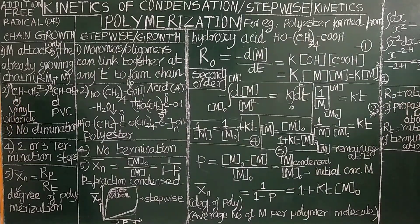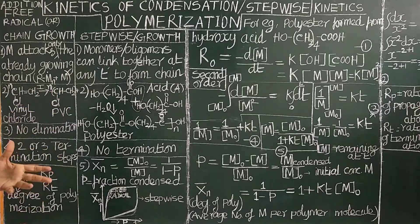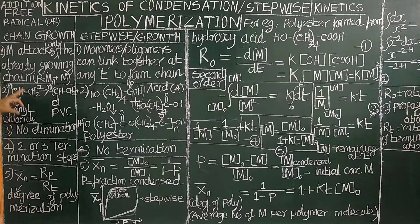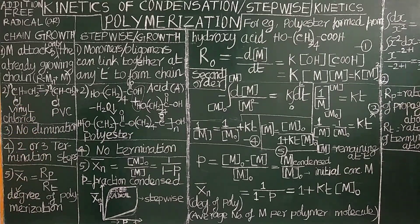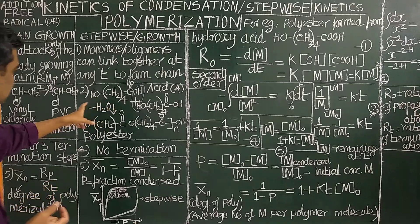For example, vinyl chloride undergoes polymerization in the presence of an initiator and heat/pressure to give polyvinyl chloride (PVC). In free-radical addition polymerization, there is no elimination of simple molecules and there are no byproducts formed.